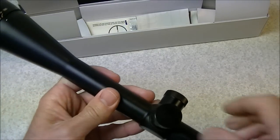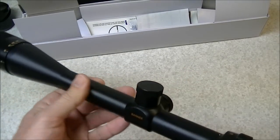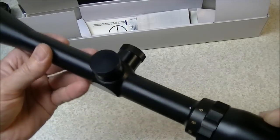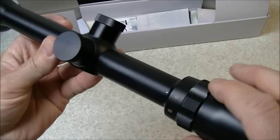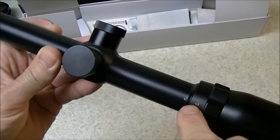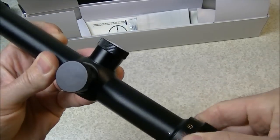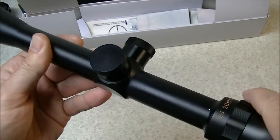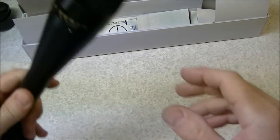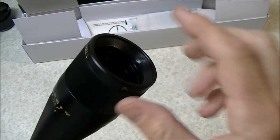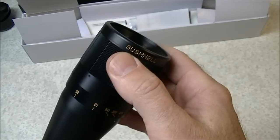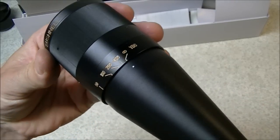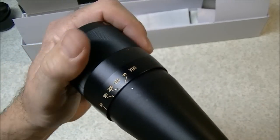Now this is a target varmint style of scope. You can see it's a fairly big scope and it is a 6 to 24 power variable scope. You can see it's set here to the lowest power at 6 and by turning the adjustment we can go up to 24 power and it has an objective lens of 40 millimeter diameter. Bushnell's got their branding on it there and it is parallax adjustable as well at the front end.